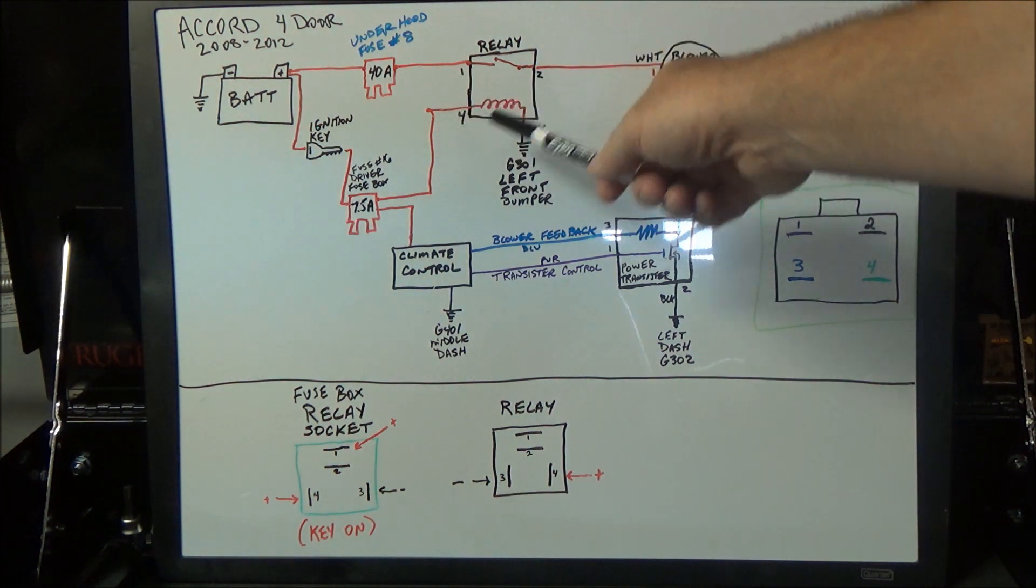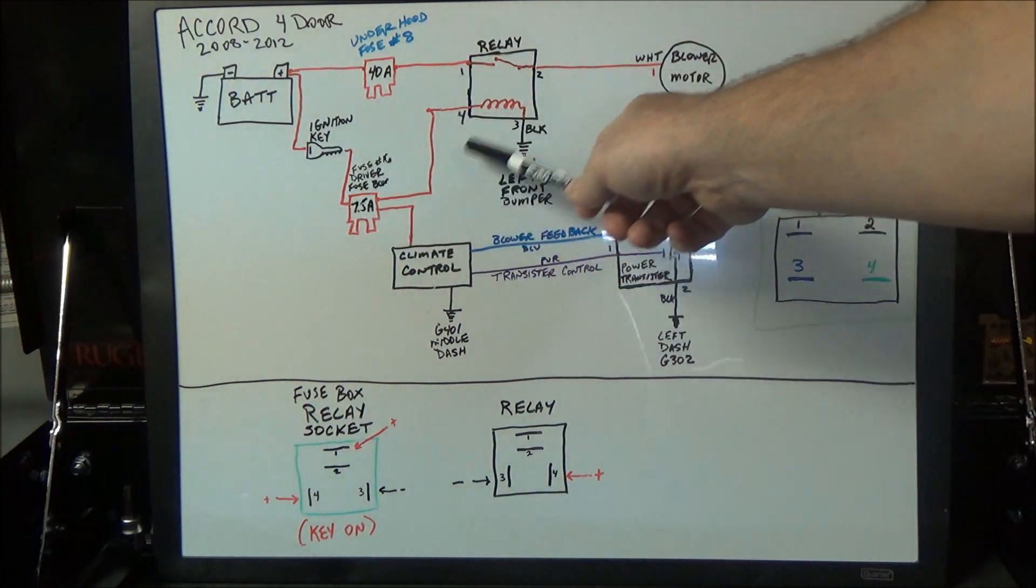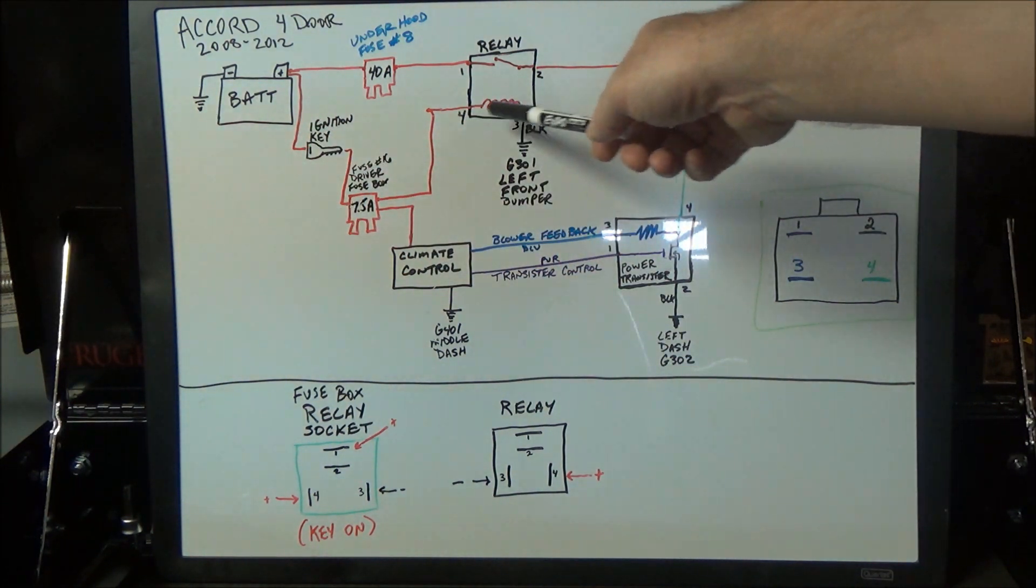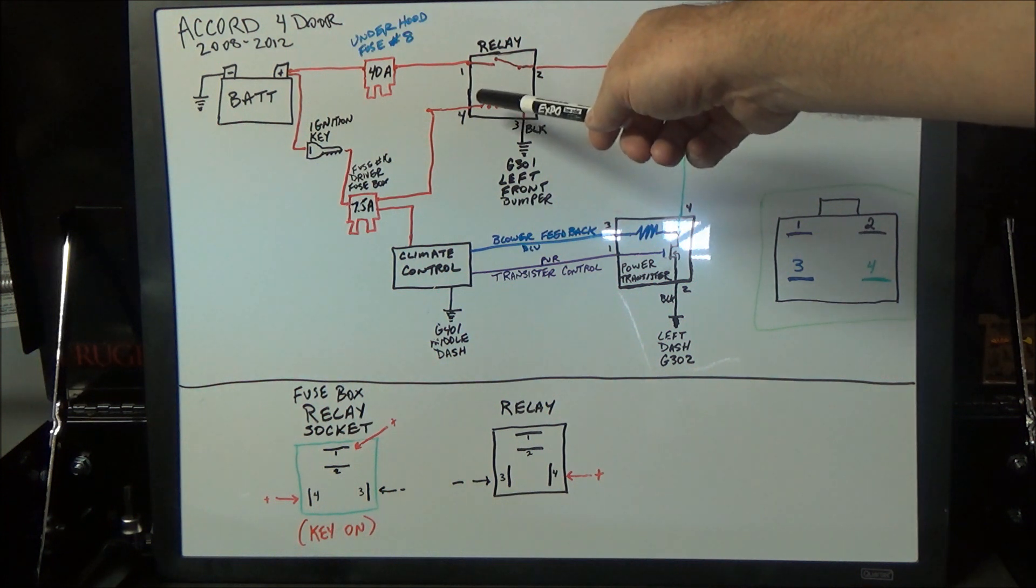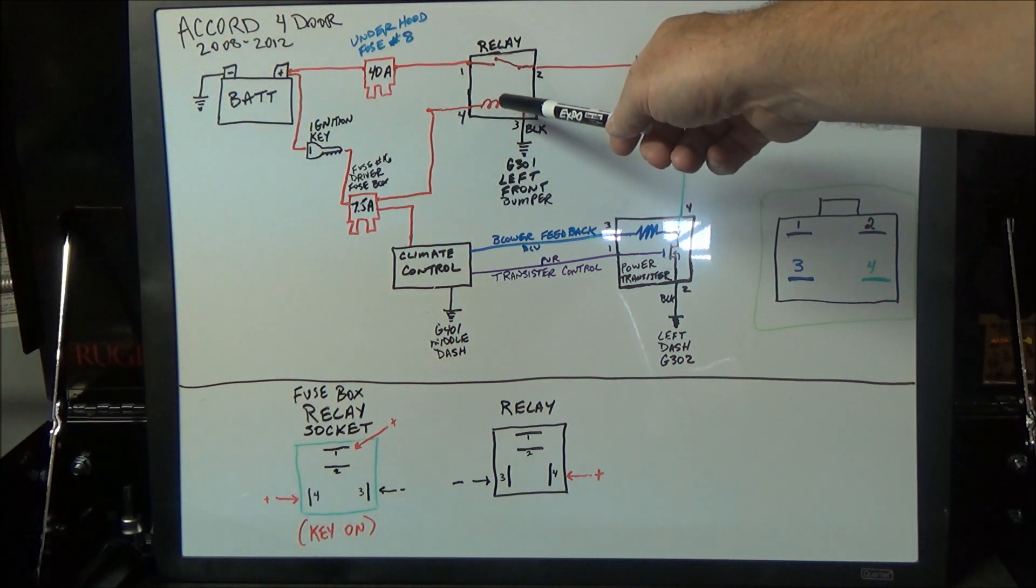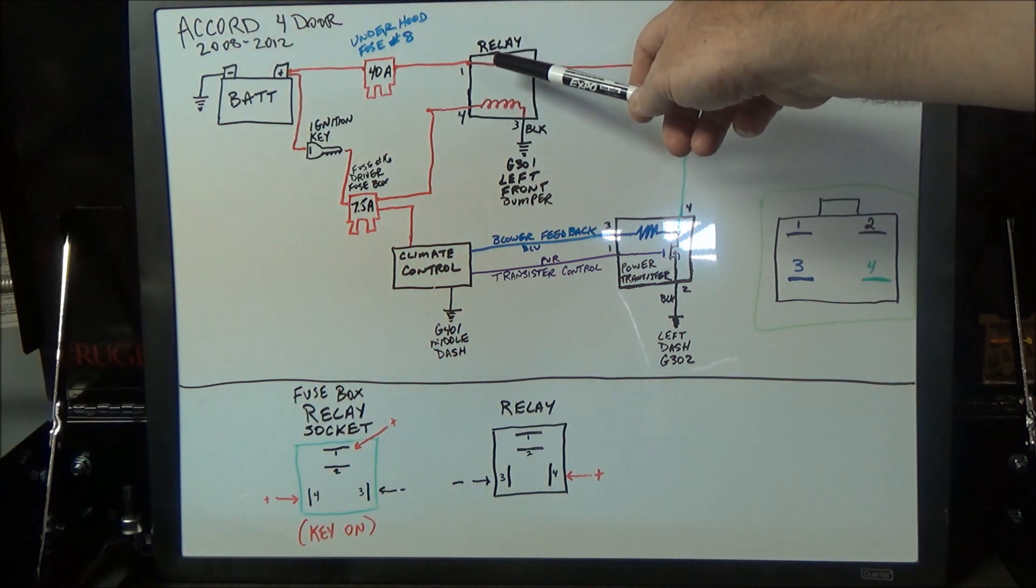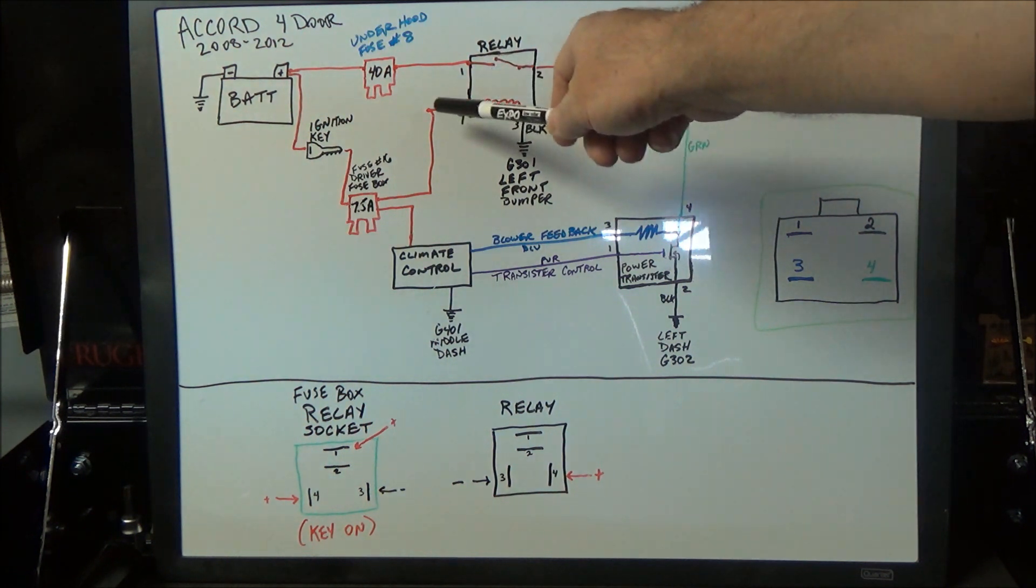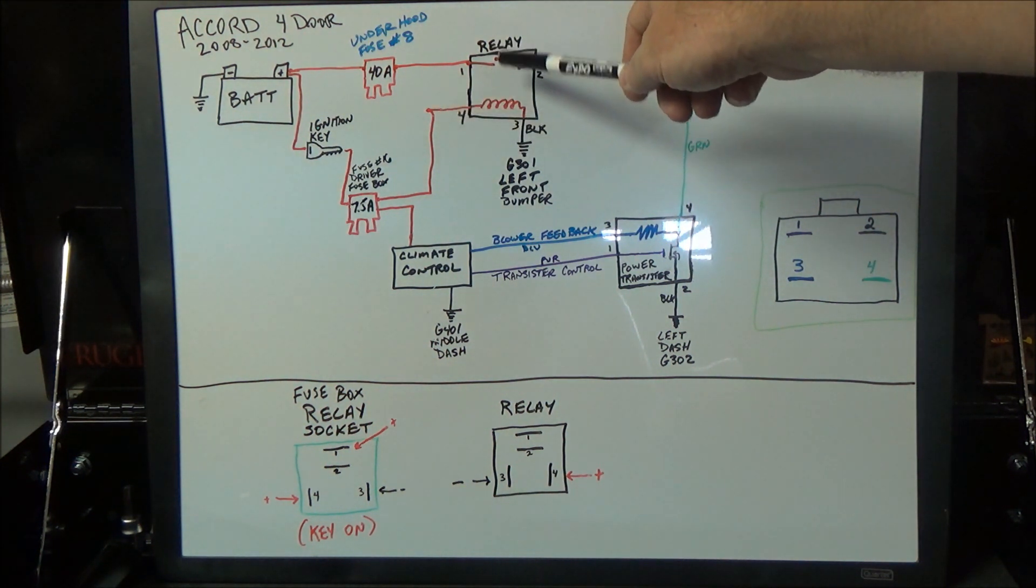This is your control side. When you turn your ignition on, this powers up the coil on this side of the relay—the control side—and it creates a magnetic field. That magnetic field will pull the switch closed, and when you listen closely you'll actually hear it click.